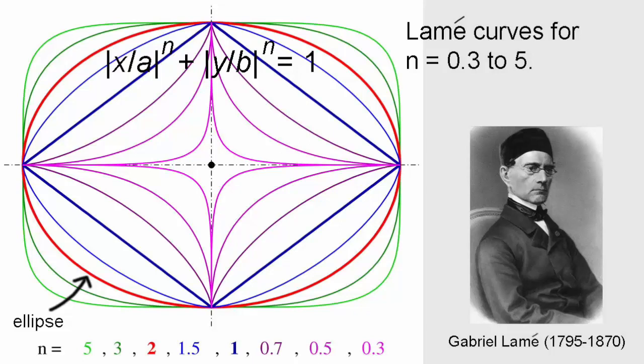A four-pointed star shape called an astroid is the result when n equals 2 over 3. For all values of n greater than 2, Lamé curves are known as super ellipses.